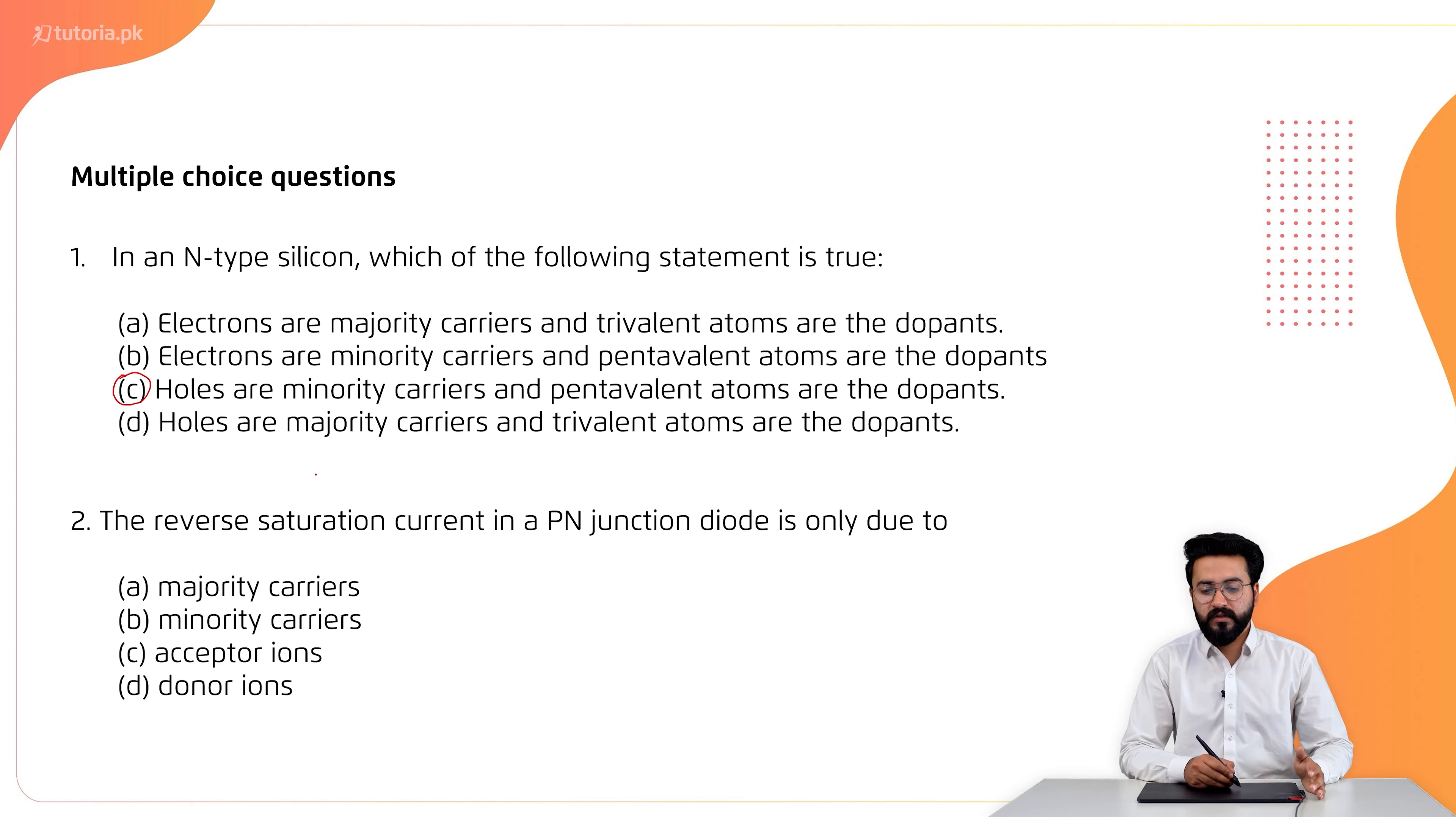Next one is, the reverse saturation current in a PN junction diode is only due to? The reverse saturation current, which students have studied in PN junction diode? The correct option is B, due to minority carriers.